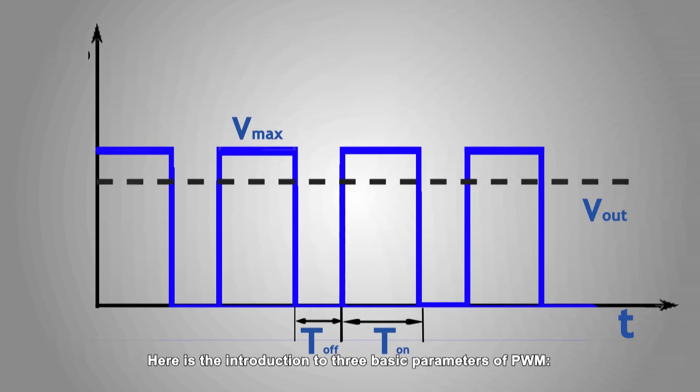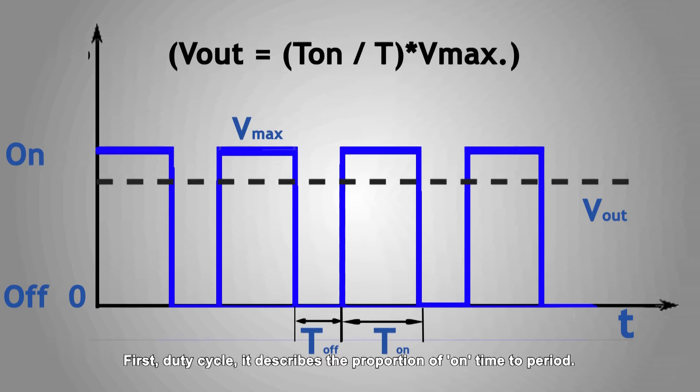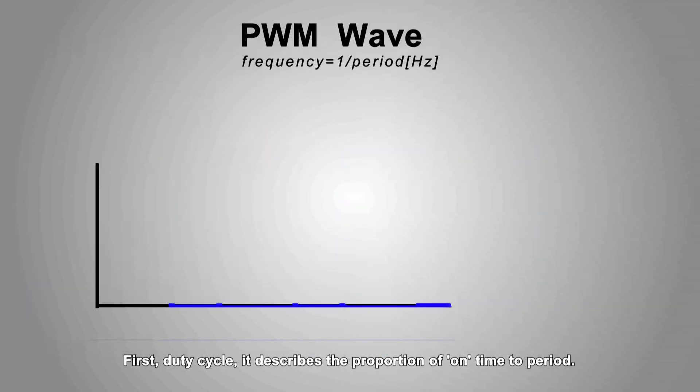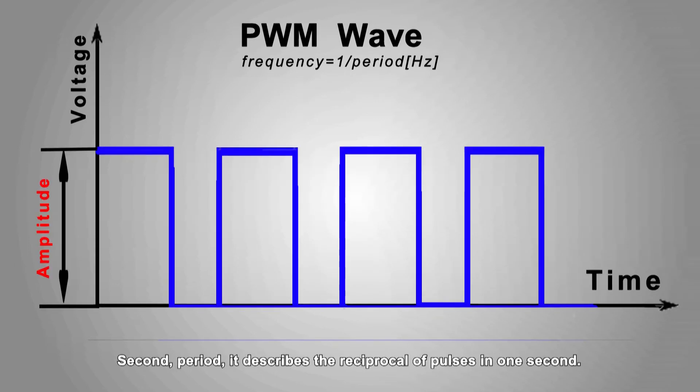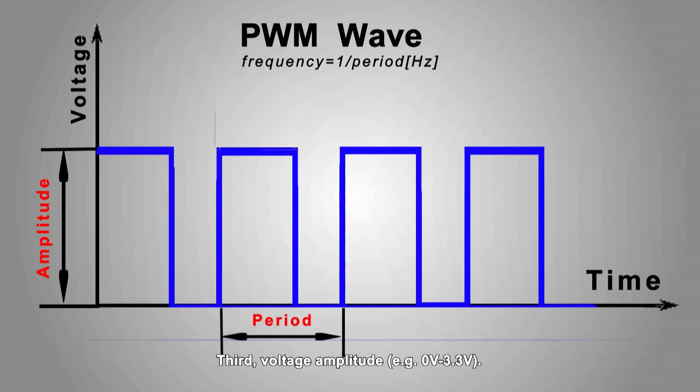Here is the introduction to three basic parameters of PWM. First, duty cycle. It describes the proportion of on time to period. Second, period. It describes the reciprocal of pulses in one second. Third, voltage amplitude. For example, 0V to 3.3V.